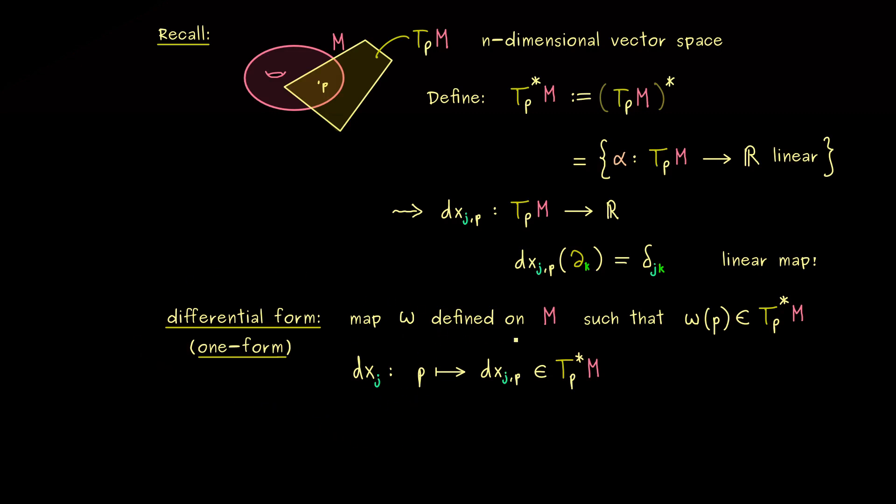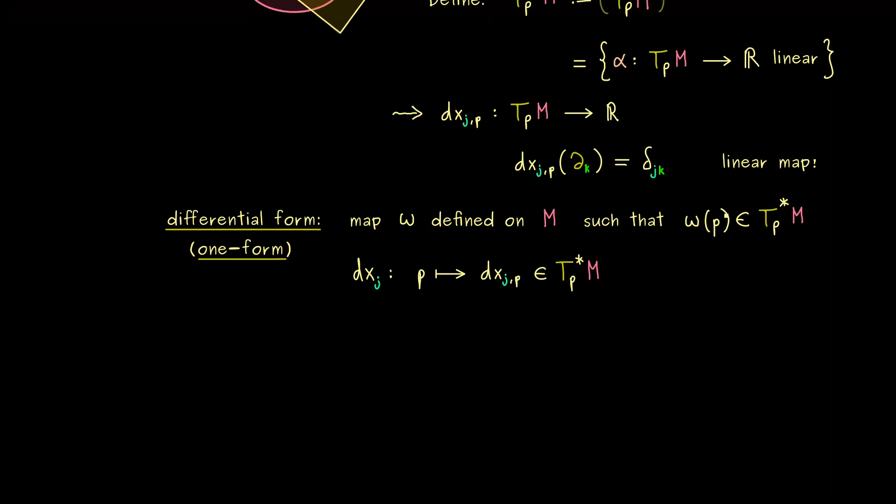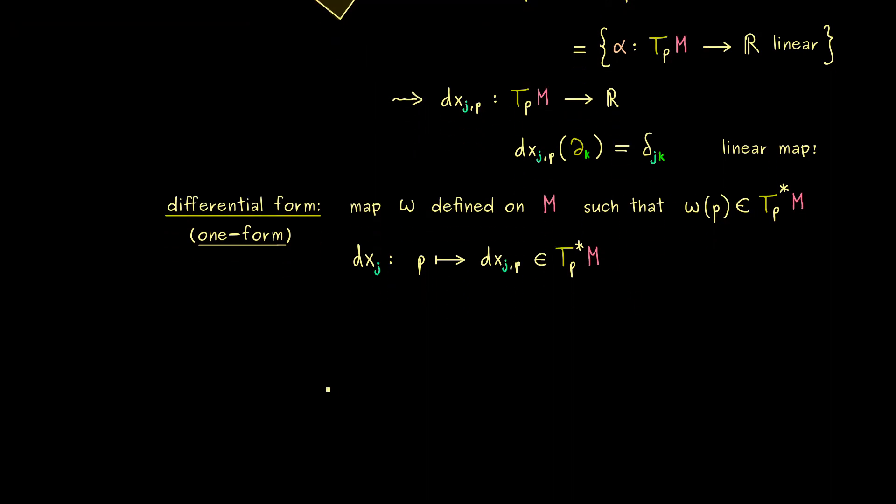And now we already know one example, namely dxj. And now you have to see it as a map defined on the manifold. This means each point p is sent to the linear map from before. So now you already know what a one-form is. It's just a map that gives for each point on M a linear map.